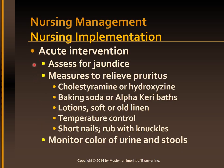Nursing care and assessment should include the patient's physiological response to cirrhosis. Is jaundice present? Where is it observed — sclera, skin, or hard palate? What is the progression of the jaundice? If jaundice is accompanied by pruritus, measures to relieve itching should be carried out. Cholestyramine (Questran) or hydroxyzine (Atarax) may be ordered to help relieve pruritus. Measures to help alleviate pruritus include baking soda or oatmeal baths, applying lotions containing calamine, antihistamines, soft or old linen, and control of temperature — not too hot and not too cold.